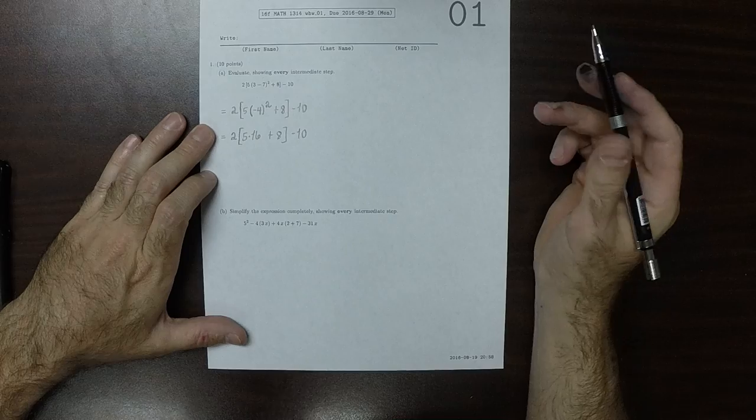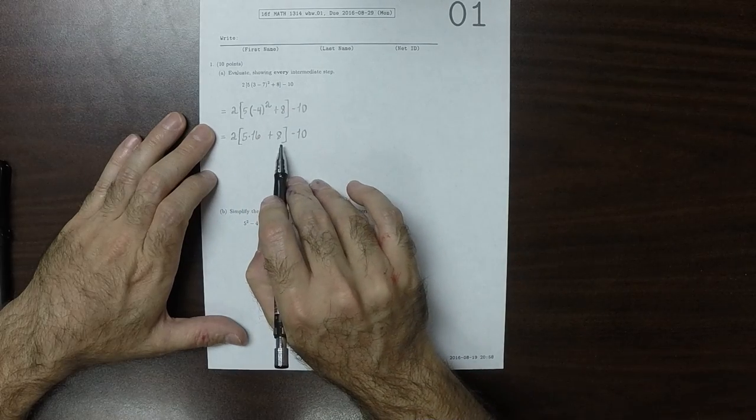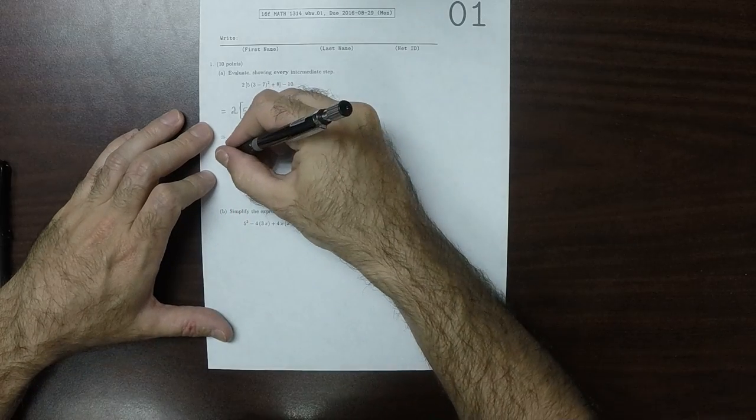So now according to the order of operations, what must occur first is inside these parenthesis, and now we have two operations, multiply and add. So between those, multiply occurs first.